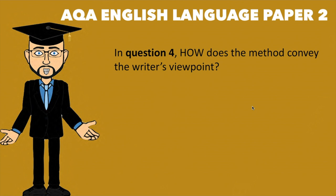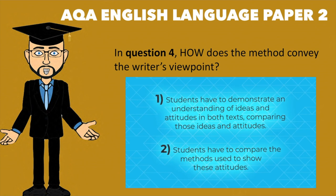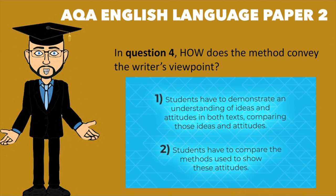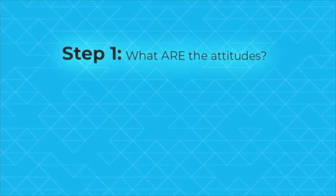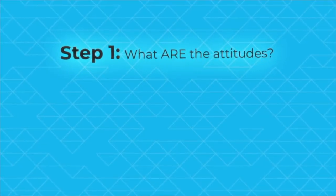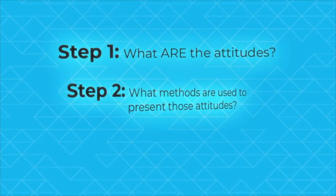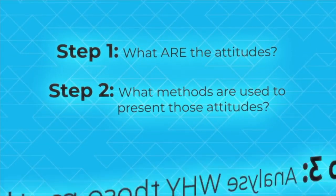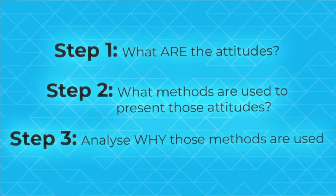With question 4, we know it's about the writers' viewpoints and perspectives, and it's important to identify not just the perspective, but the method used to present it. A great approach for this question is: your first step is, what are the attitudes? Your second step is, what methods are used to present the attitudes? And step 3 is analysis of why those methods are used.